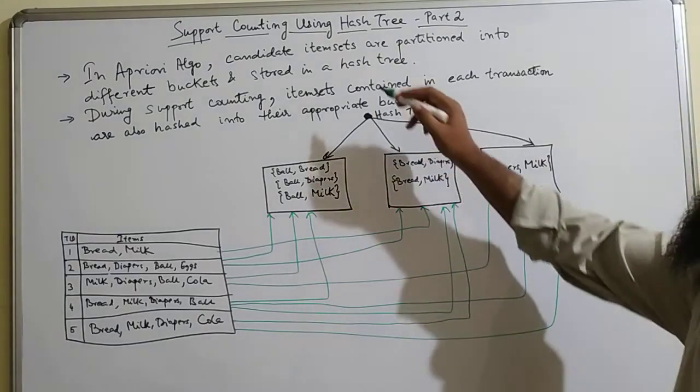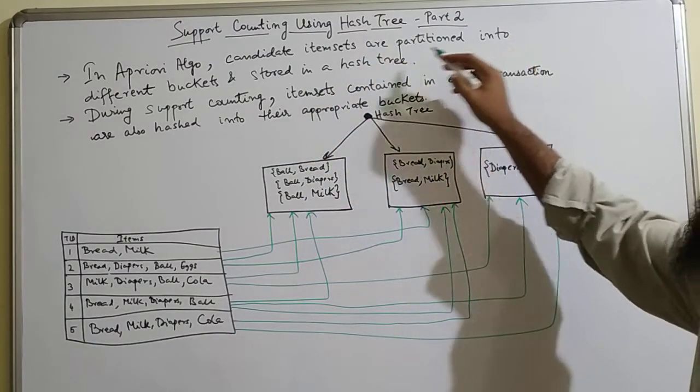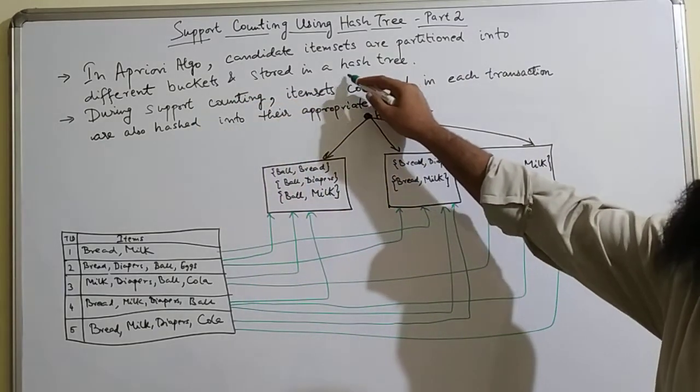In apriori algorithm, candidate item sets are partitioned into different buckets and stored in a hash tree.